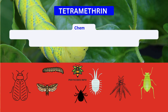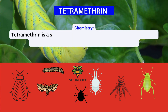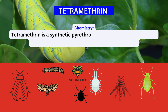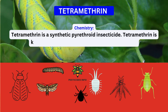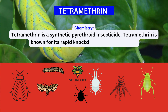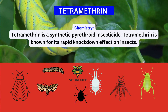Chemistry. Tetramethrin is a synthetic pyrethroid. It is designed to mimic the insecticidal properties of natural pyrethrins derived from chrysanthemum flowers. Tetramethrin is known for its rapid knockdown effect on insects.